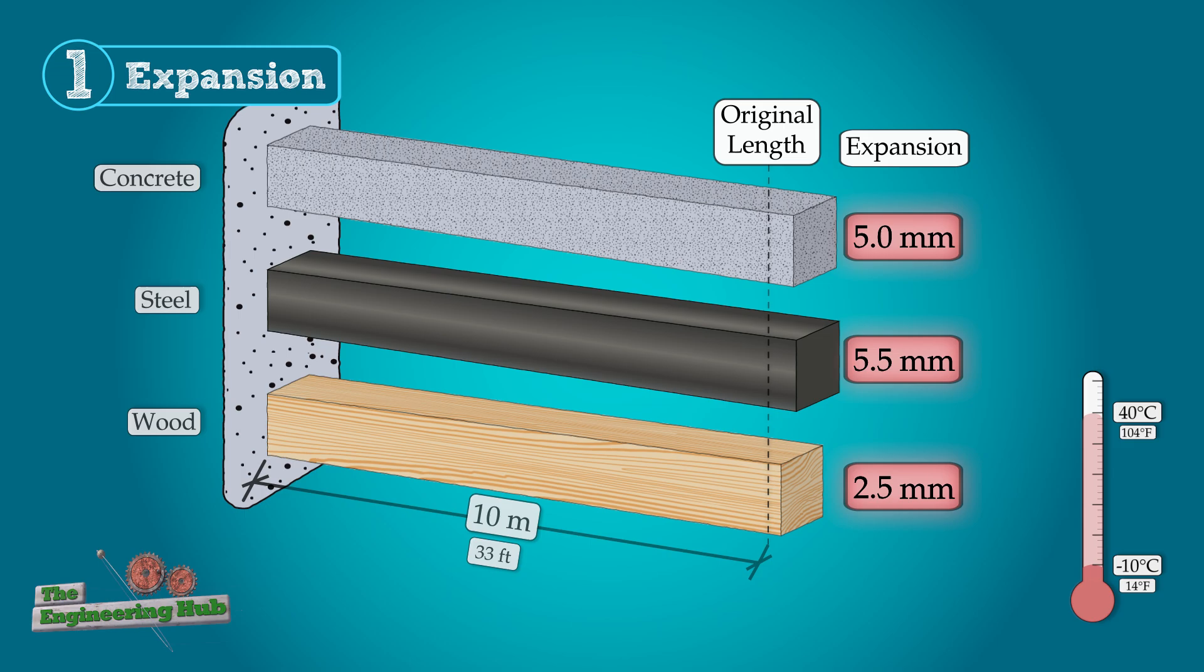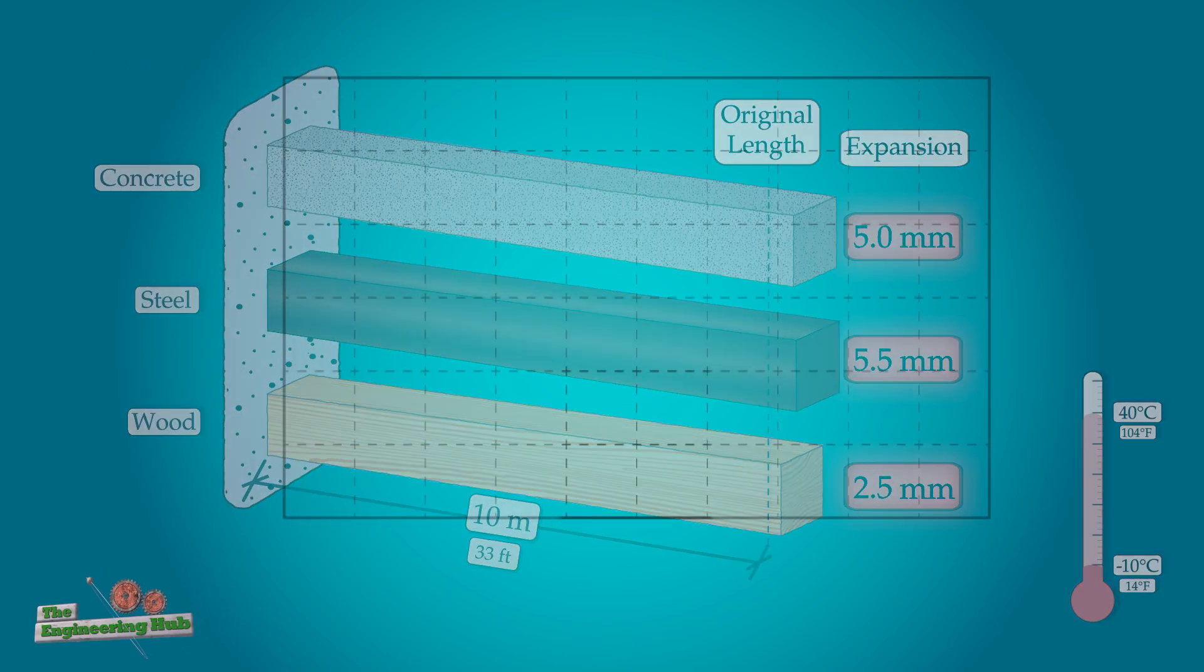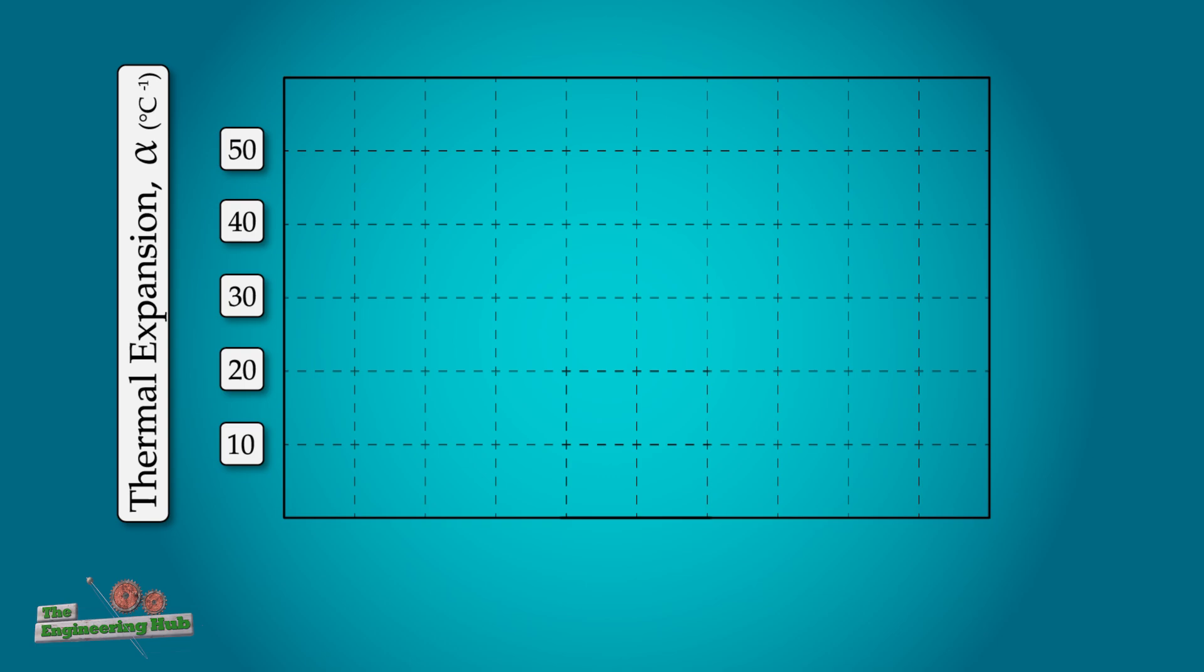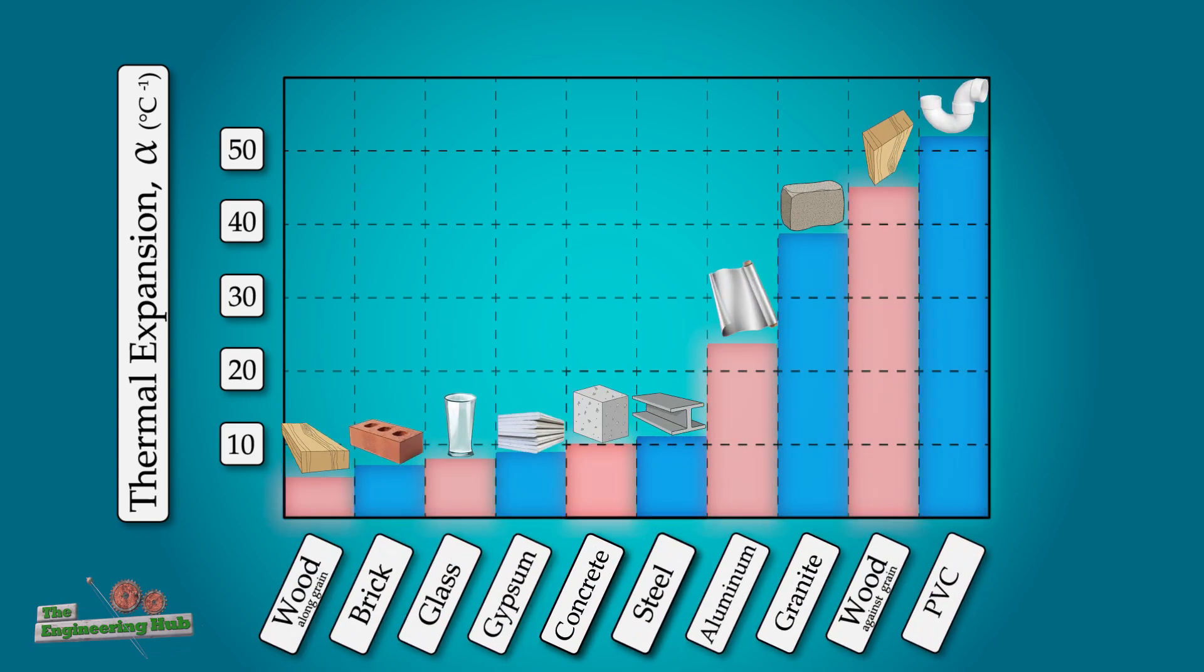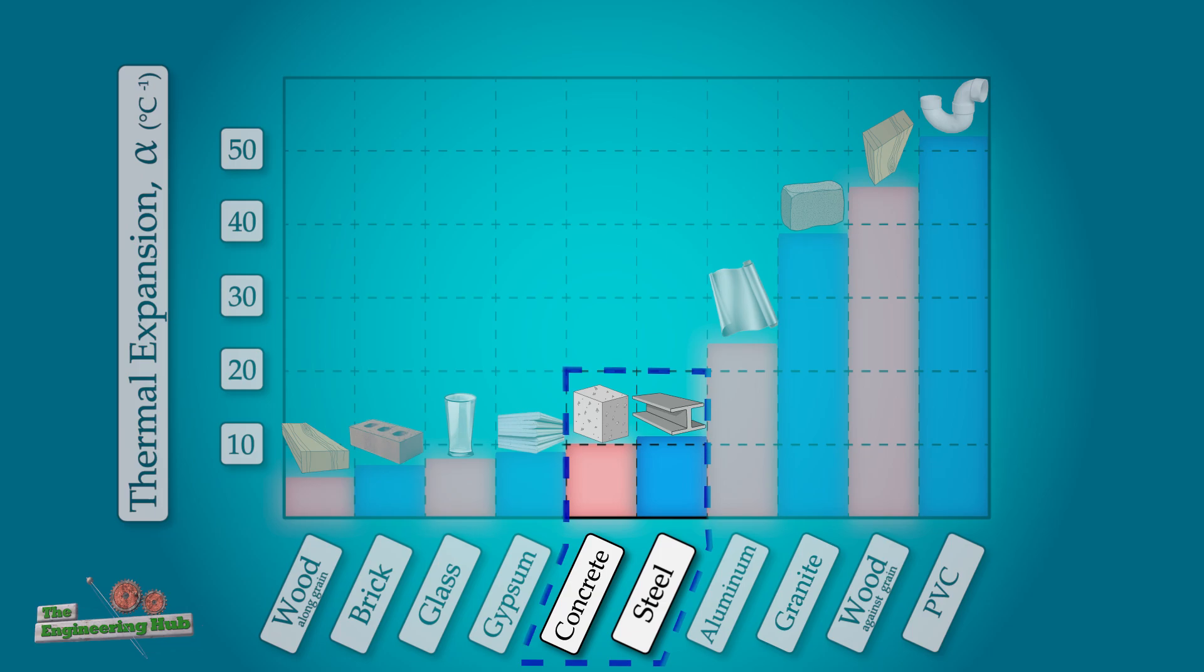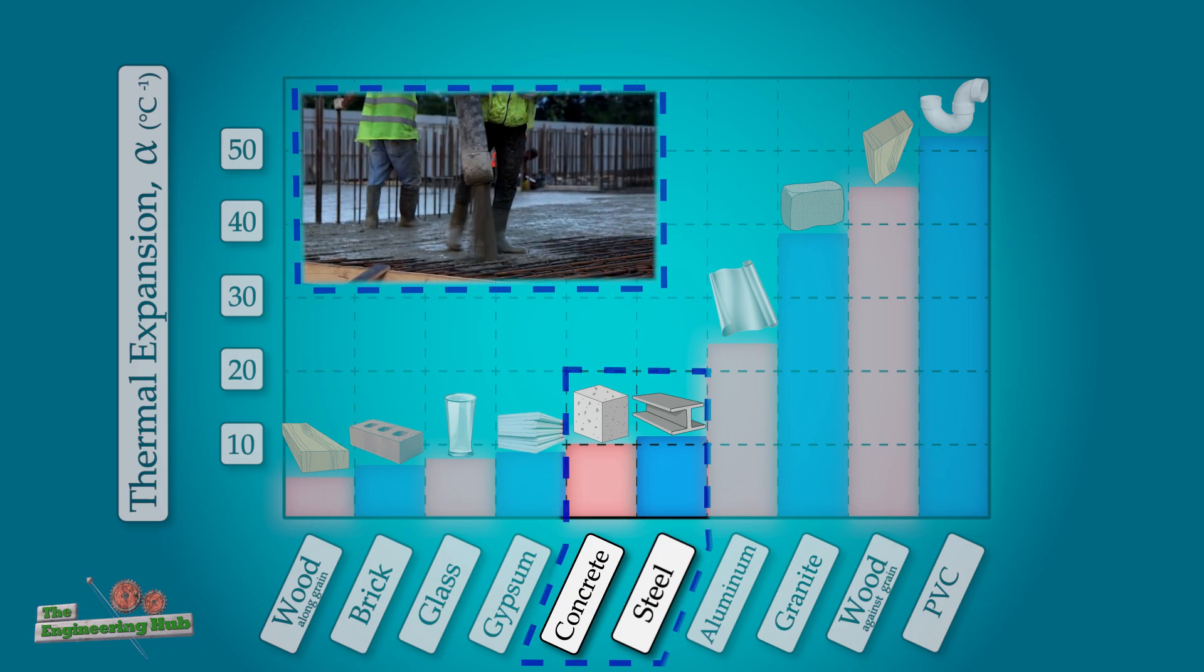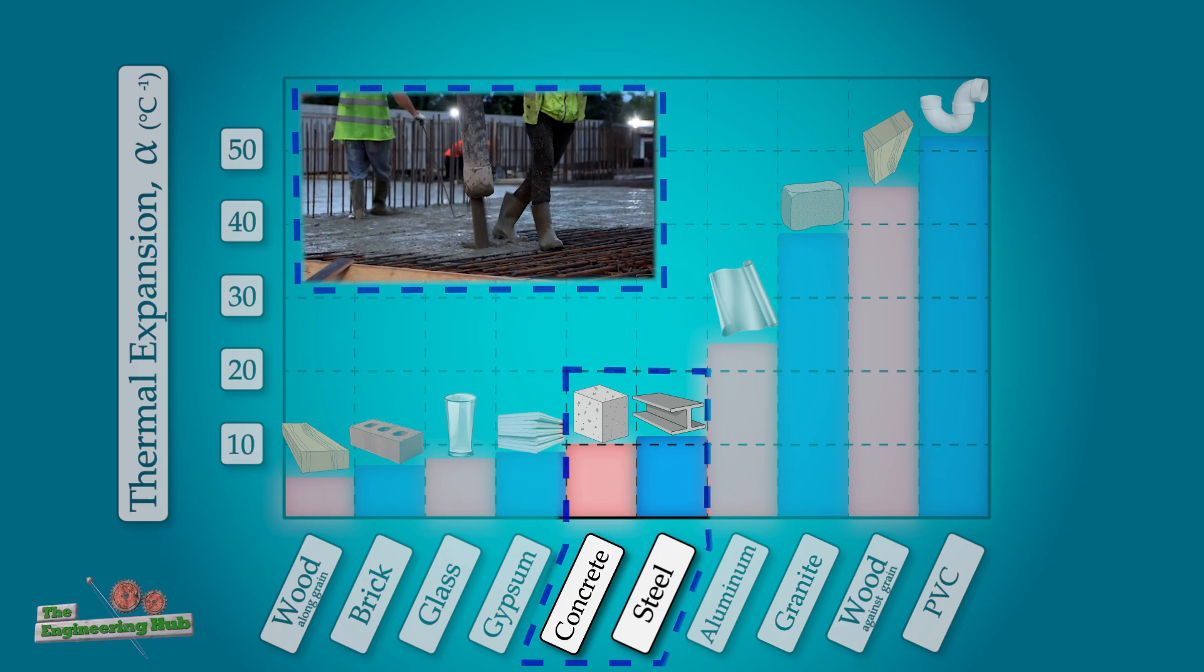The difference in expansion of each material is due to each having a different thermal expansion coefficient, which can be plotted here for comparison to many other materials. Concrete and steel have similar coefficients, which is one of the many reasons that make reinforced concrete such a useful composite.